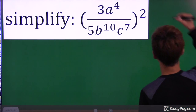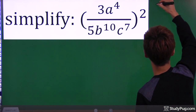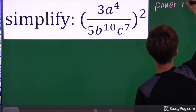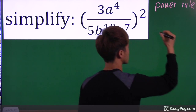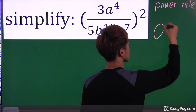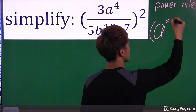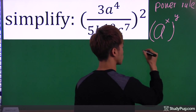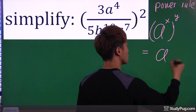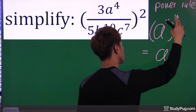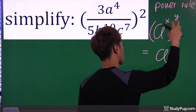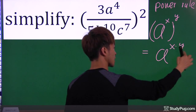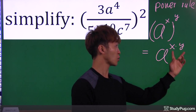To simplify this expression, we have to apply the power rule. I'm going to write down the power rule again. If we have something like a to the power of x, outside the whole thing to the power of y, we know that when you have an exponent and an exponent right next to each other, you can just put them together. Basically, you multiply the exponents together.